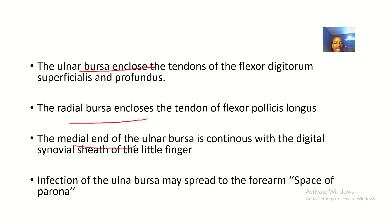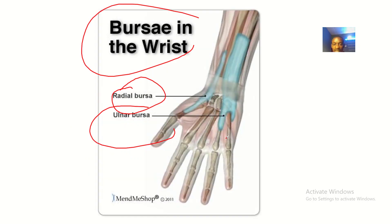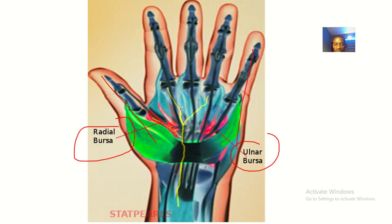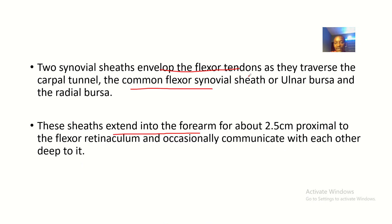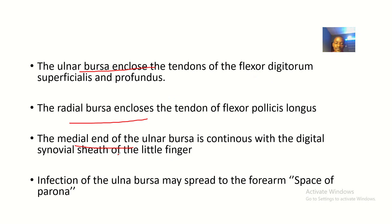The medial end of the ulnar bursa is continuous with the digital synovial sheet of the little finger. As you can see on the diagram, the ulnar bursa extends into the little finger, which explains this continuity.